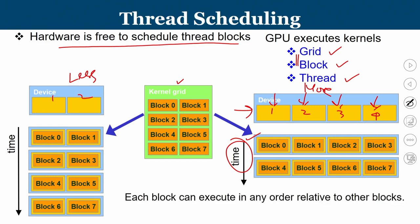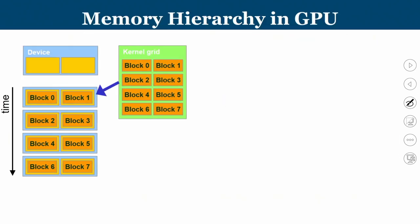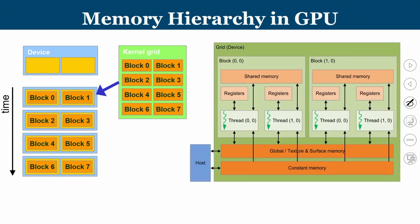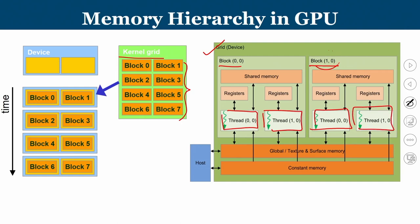Now let us look at the memory hierarchy inside the GPU. A kernel grid contains blocks, and inside the blocks are threads. The grid is inside the device, containing block(0,0), block(1,0), and so on. The thread is located inside a block — thread(0,0), thread(1,0) in one block, and thread(0,0), thread(1,0) in the second block. Every thread has access to its own private registers for intermediate calculations.